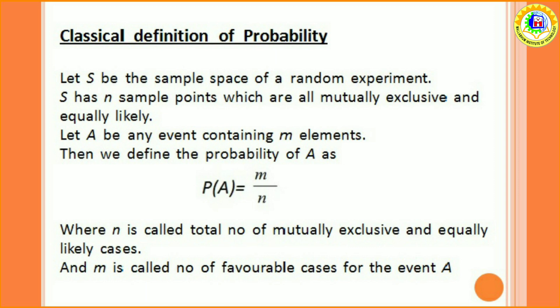Then, we define the probability of A as P of A equal to M by N, where N is called total number of mutually exclusive and equally likely cases and M is called number of favorable cases for the event A. Obviously, here N is number of elements in sample space S and M is number of elements in the event A.